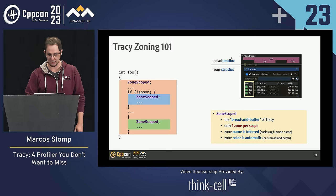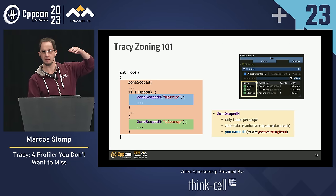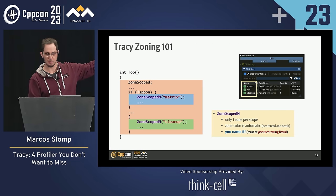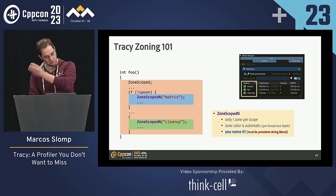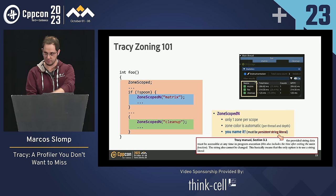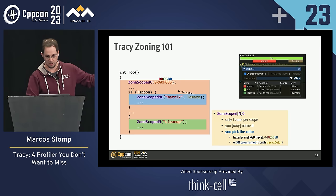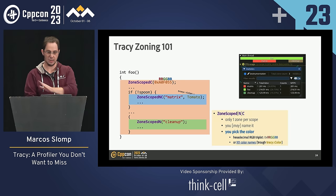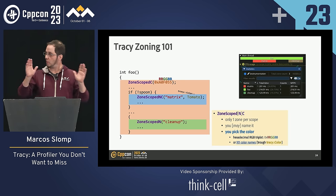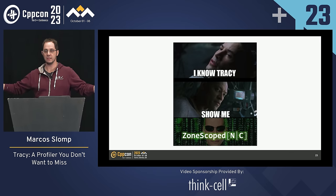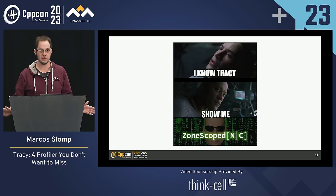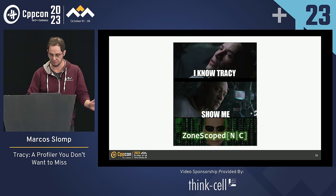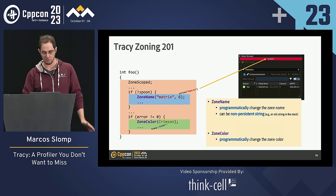The string you give for a zone name has to be a persistent string — it cannot be stack-allocated. It has to persist throughout the execution of your program. Colors use X11 color names, and if you understand just this — zone scoping, naming, and coloring — you can go very far with Tracy. Really, really far with just that.